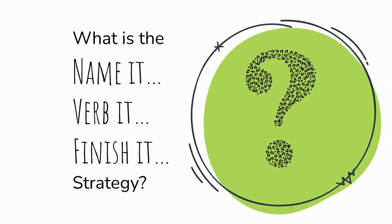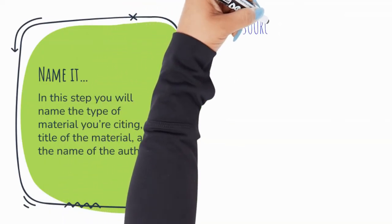So what is the name it, verb it, finish it strategy? The name it, verb it, finish it strategy is a way to take notes and organize your evidence statements into complete ideas while giving credit to the original source material.